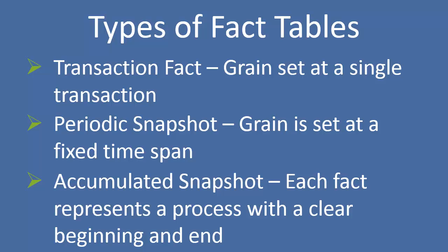Then you have your accumulated snapshot fact table. This is similar to a periodic snapshot fact table, except instead of spanning time, we're going to be spanning a particular business process. So let's take a look at each of these.